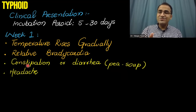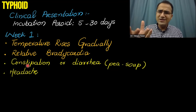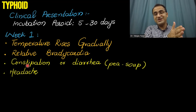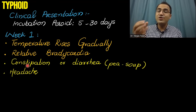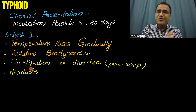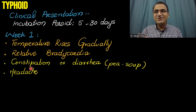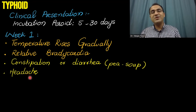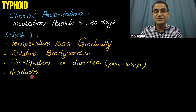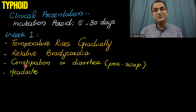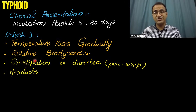The GI symptoms in the first week will be very vague. Sometimes the patient will complain of constipation, sometimes of diarrhea — foul, smelly, pea-soup diarrhea. The frequency of constipation and diarrhea is usually equal in these patients. The patient will also be complaining of headaches. This is the presentation of a patient in the first phase of infection.